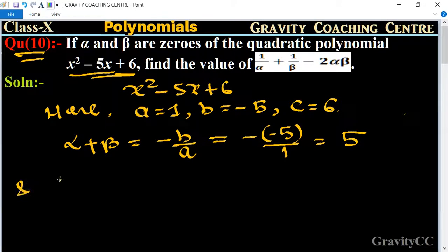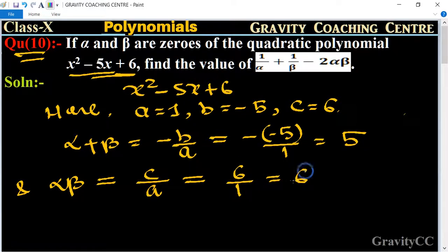Product of zeros equals c/a. Here c = 6 and a = 1, so the product is 6.